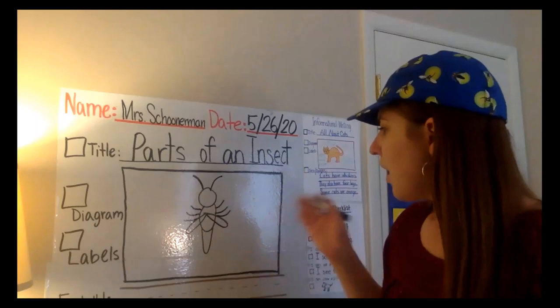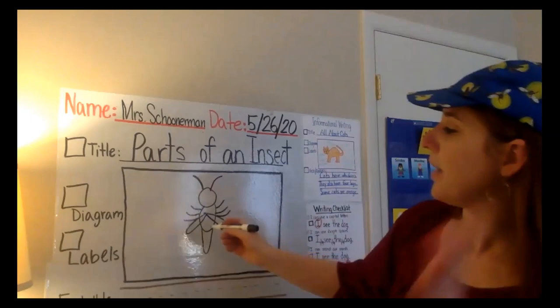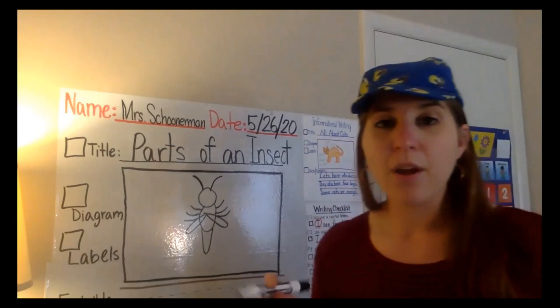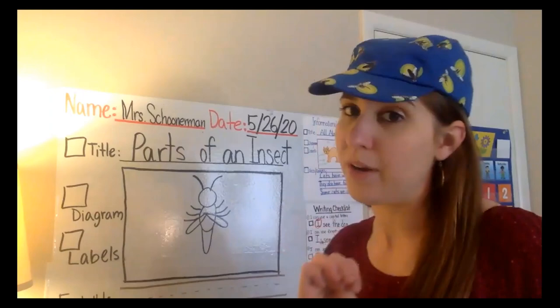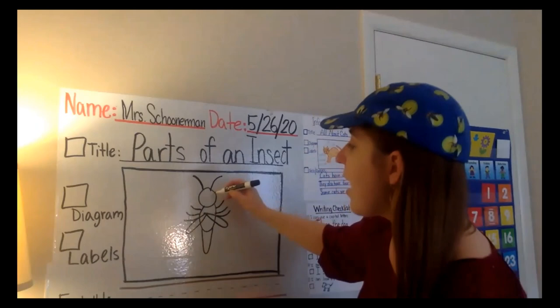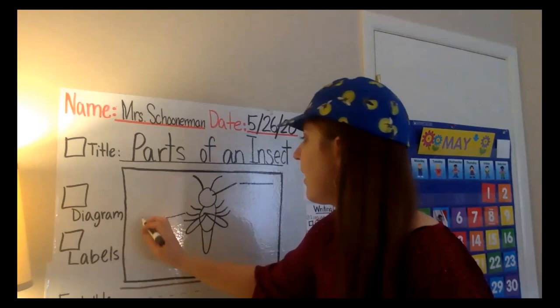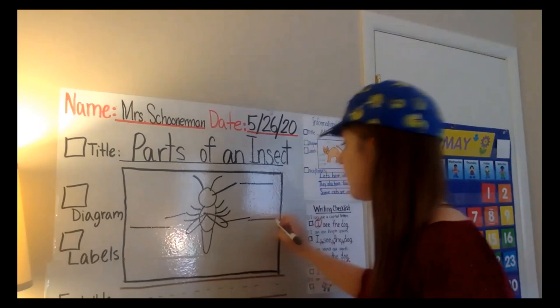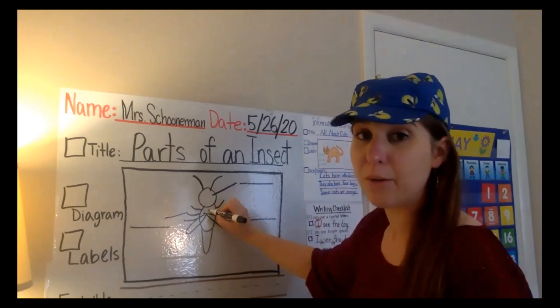But now we need to add labels — it's time for this part of our informational writing piece. Now remember, when I said our learning target, we're going to add labels and we're going to write two facts. And just like last week, I'm going to start writing some of the labels with you, but then I'll challenge you to add three more when we're done with the video. Today let's label the thorax together — the middle part. So draw a line from that middle part of the body on your insect and let's label it thorax.